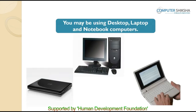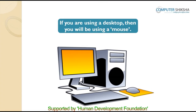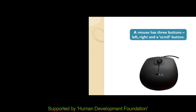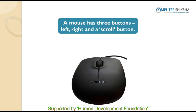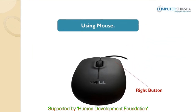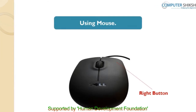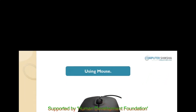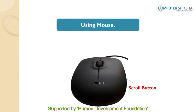Let us now start operating the computer. If you are using a desktop, then you will be using a mouse. A mouse has three buttons: left, right, and a scroll button. The left button is the most used and you use it to select a file or a folder. The right button is used to refresh the computer, create new folders, rename files, or delete files. The scroll button is used to do page up or page down.